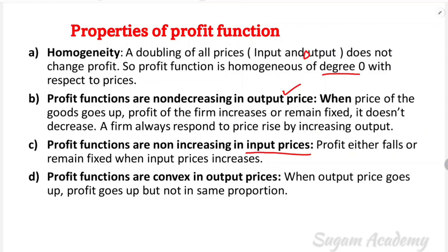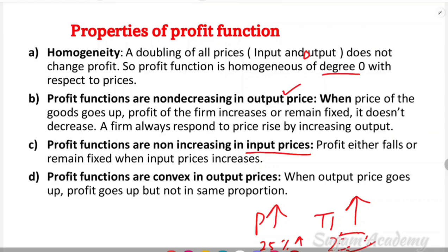The last property is that profit functions are convex in output prices. When output price goes up, profit goes up, but not in the same proportion. For example, if price increases by 25 percent, we cannot say that profit will also increase by 25 percent, because when price increases, demand comes down, so output does not increase in the same proportion.